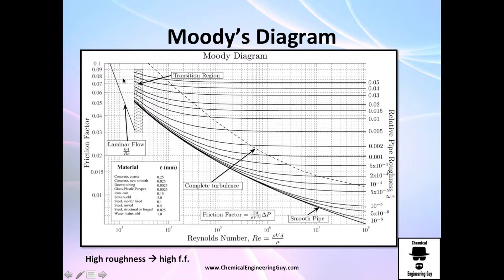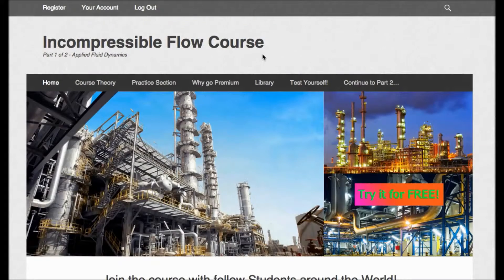So high roughness, high friction factor. That's obvious. If you increase relative roughness, you go along with this. Because every line tends to go up. If you decrease the relative roughness, you decrease the friction factor. So moral of the story, get smooth pipes if you want.